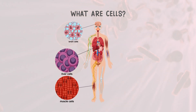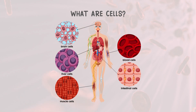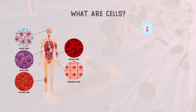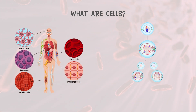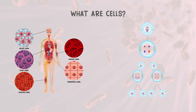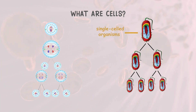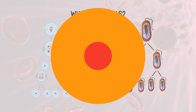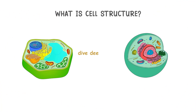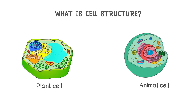In the case of multicellular organisms like humans, cells divide to help with growth and replacing dead cells. But in single-cell organisms like bacteria, every division creates a whole new organism. Let's dive deeper into cell structure. We'll start by comparing animal and plant cells side by side to uncover their similarities and differences.